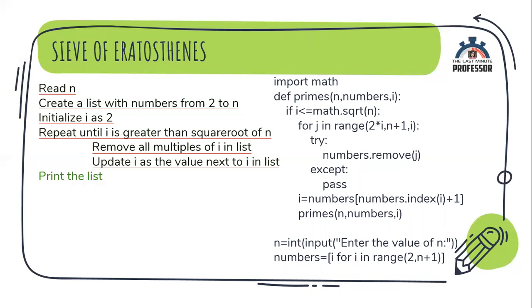By the end, when the condition fails, the list numbers will be containing the prime numbers. So, return the numbers. This is the function. I need to call the function and print the result returned by the function. That is the next step. I am giving it as print primes of n, numbers, I am initializing the value of i to 2 through this.